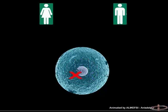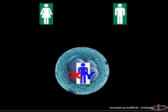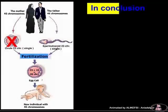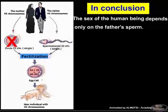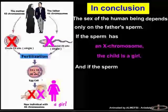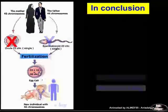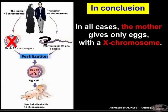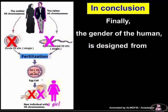If the sperm that penetrates the ovum has the Y chromosome, the baby will be a boy. In conclusion, the sex of the human being depends only on the father's sperm. If the sperm has an X chromosome, the child is a girl. And if the sperm has a Y chromosome, the child is a boy. In all cases, the mother gives only eggs with an X chromosome. Finally, the gender of the human is determined by the father's sperm.